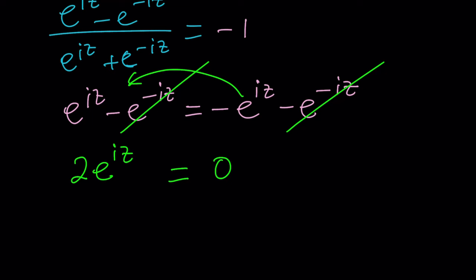E to the iz equals zero. And you're like, what? No solution. Why? Maybe if Z approaches infinity e to the iz can approach zero, but wait, this is not a limit. We're looking for a particular specific value, so we don't have a solution.